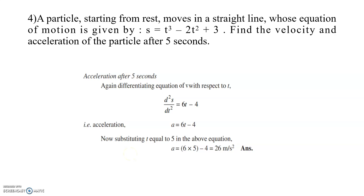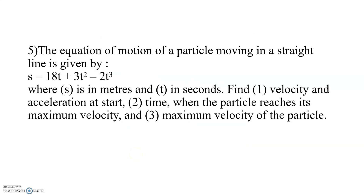We can also determine acceleration after five seconds using a = d²s/dt². Differentiating the velocity equation once more gives a = 6t − 4. Substituting t = 5 seconds, we get acceleration a = 6(5) − 4 = 26 m/s².